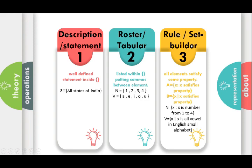The third representation format is the rule or set builder method. Here we have a proper rule — all elements satisfy some property. We write: A = {x | x satisfies some property}, where the bar symbol means 'such that'. For example, N = {x | x is a number from 1 to 4}, and V = {x | x is a vowel in the English alphabet}.